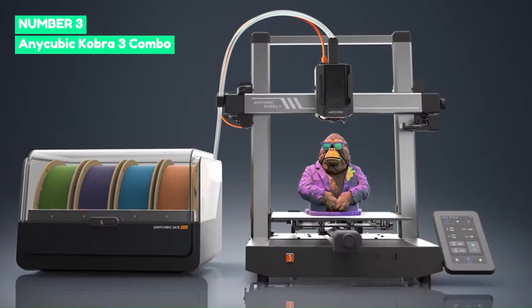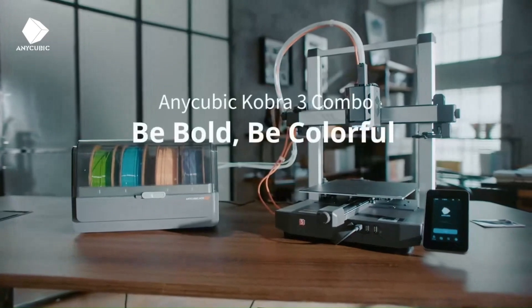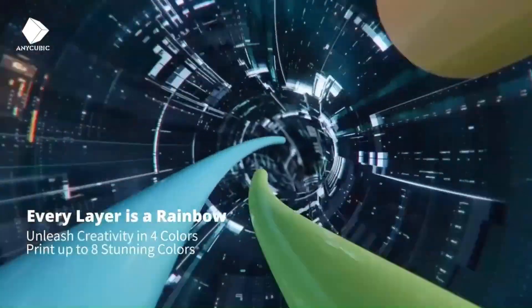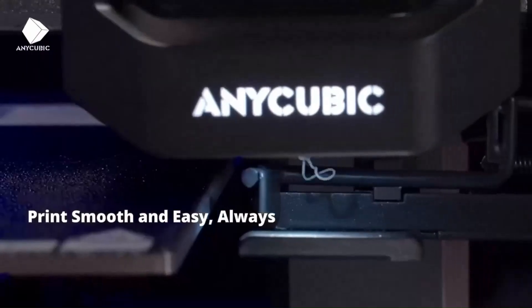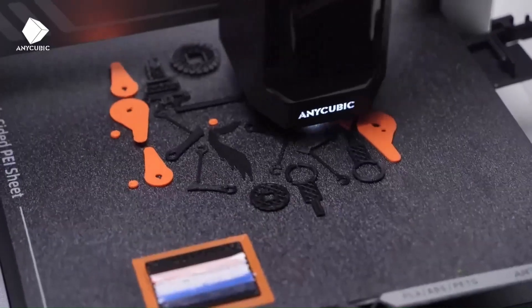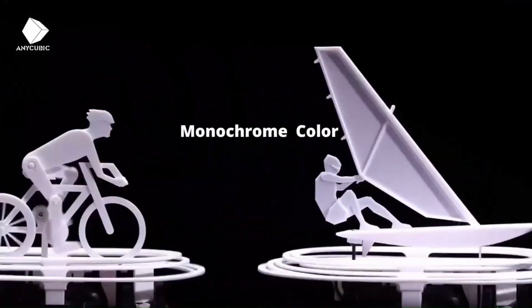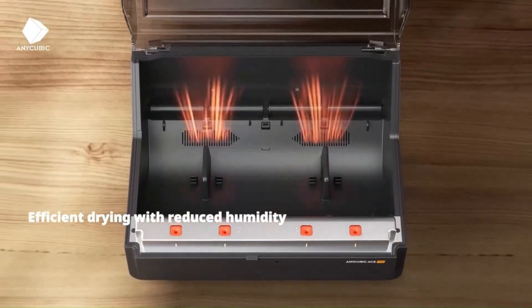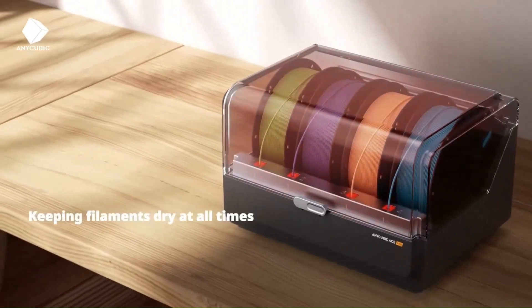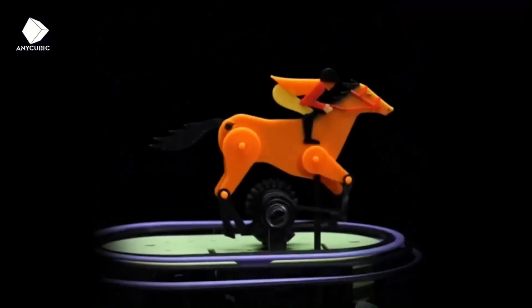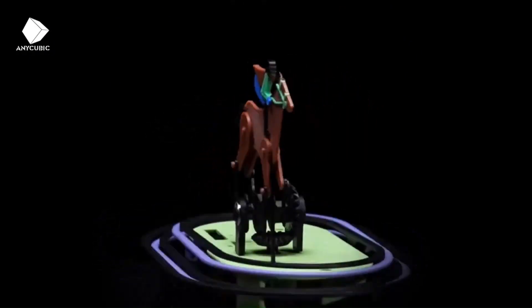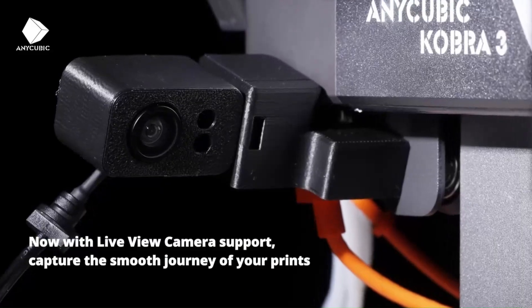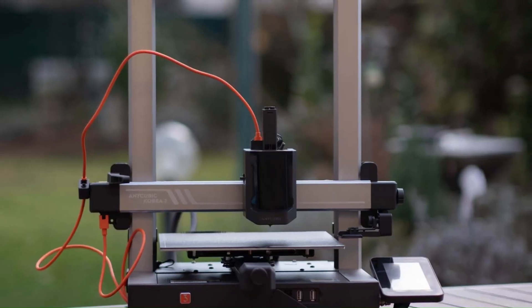Number 3: Anycubic Cobra 3 Combo. The Anycubic Cobra 3 Combo is an innovative 3D printer that brings multicolor and multi-material printing to a budget-friendly level. Its standout feature is the ACE Pro Automatic Filament Changer, allowing users to print in up to four colors without manual swaps. Equipped with a direct-drive extruder, automatic bed leveling, and a PEI-coated flexible build plate, the Cobra 3 ensures reliable first-layer adhesion and smooth printing. The Klipper firmware enables faster printing speeds, reducing wait times while maintaining quality.